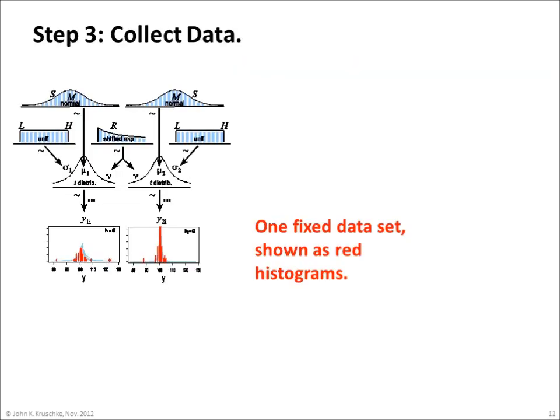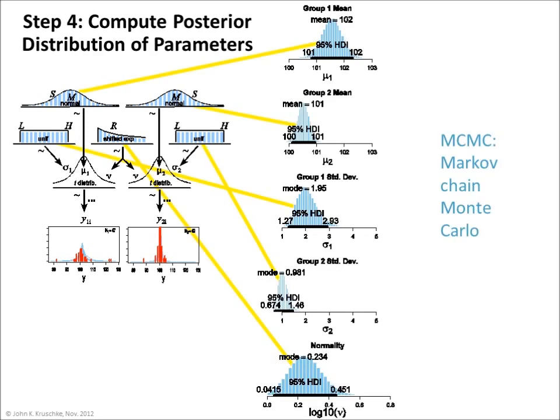The third step of Bayesian analysis is collecting the data. There is one fixed data set, shown as red histograms in the bottom of this diagram. The fourth step of Bayesian analysis is computing the posterior distribution over the parameters. There is not time in this brief presentation to fully explain the math and algorithm behind this process, but the idea is simple.